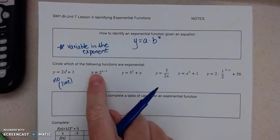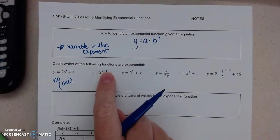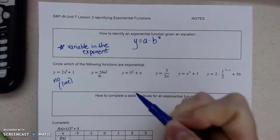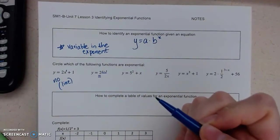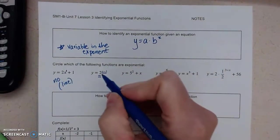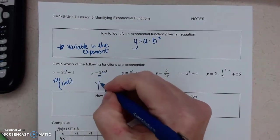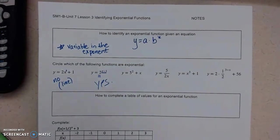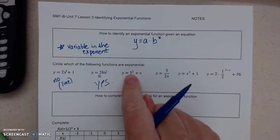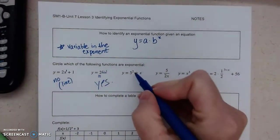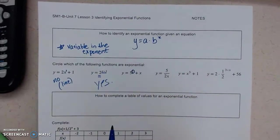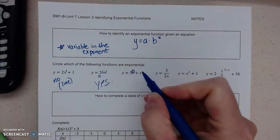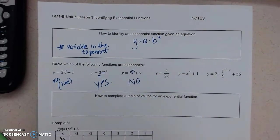Our third: y equals 5 squared plus x. We do have an exponent, but it's 2. That's not a variable. The variable is just being added. Nope. Y equals 5 divided by 2x. No exponent here. We have a denominator, but that is not a requirement.